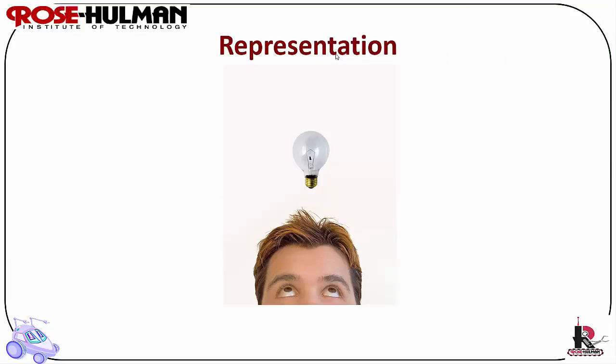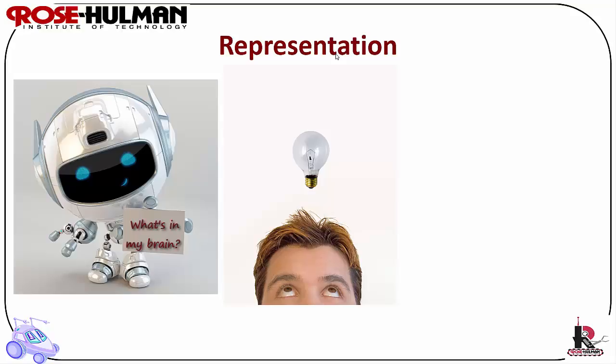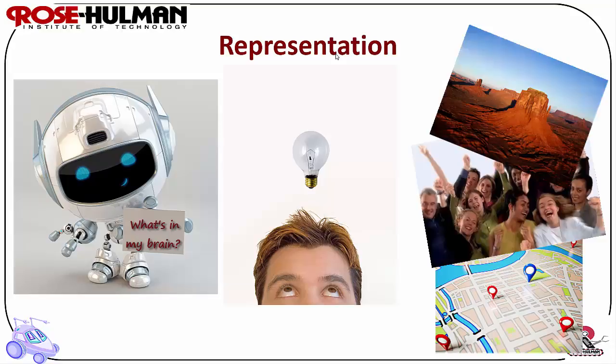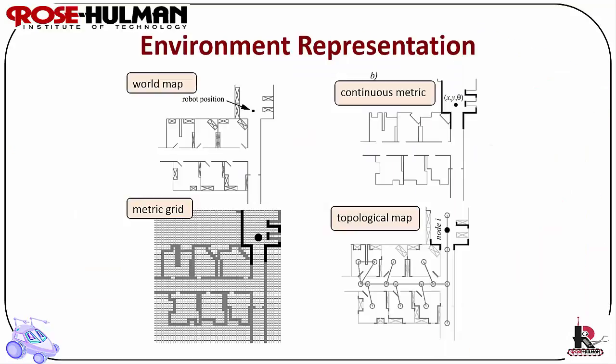Representation. The key to topological path planning is recognizing distinctive places in the world in order to make navigation decisions. Therefore, representation is integral to this process. Representation is what the robot knows and keeps in its brain — the form in which information is stored or encoded in the robot. The robot may need to remember what happened in the past or predict what will happen in the future. The robot may also need to store maps of the environment or images of people or places. The map is the most commonly used world model.